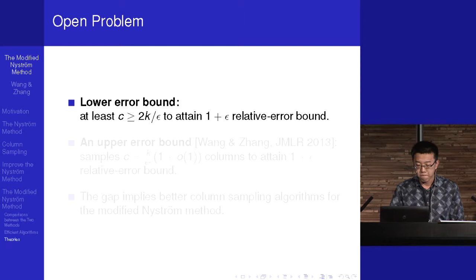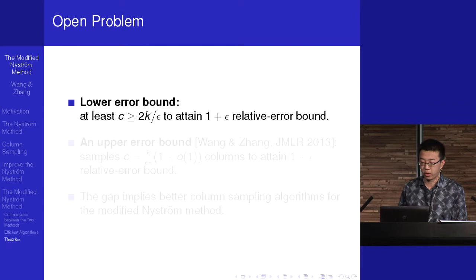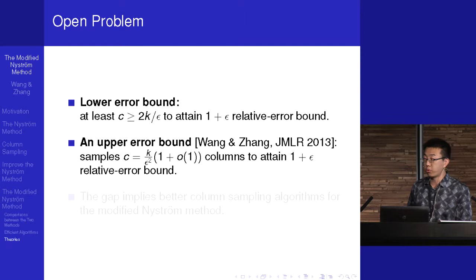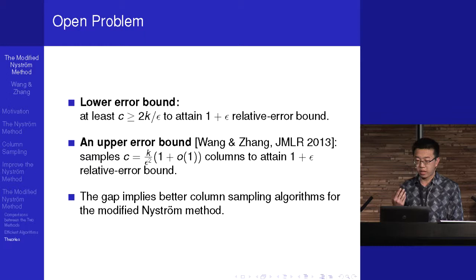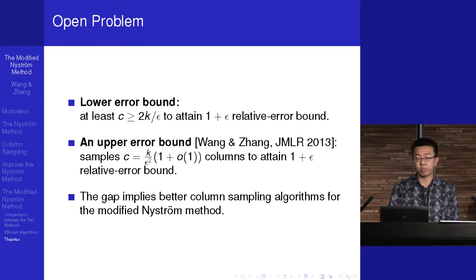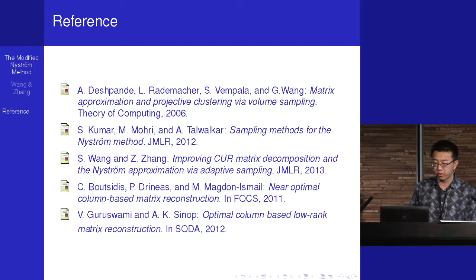To summarize: our lower error bound shows that at least 2k/epsilon columns should be sampled to obtain a 1+epsilon error bound. There is also an upper error bound from our previous work of k/epsilon-squared. So there is a gap between the upper and lower error bounds, meaning there is room for improvement. Perhaps some column selection algorithm can achieve the lower error bound, which would imply the bound is tight and the algorithm is optimal. This remains an open problem. Thank you.